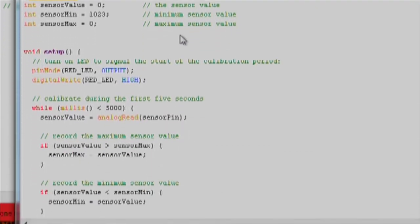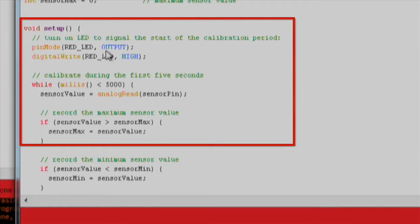In setup, we will calibrate our analog sensor. First, we turn on the red LED to signify to the user that we're in the calibration state. We use the pin mode and digital write functions to turn the red LED on.